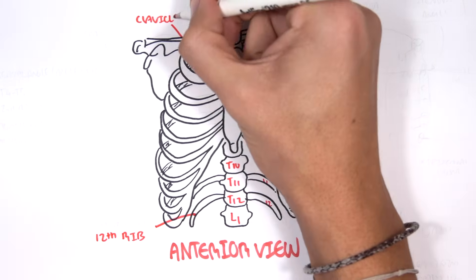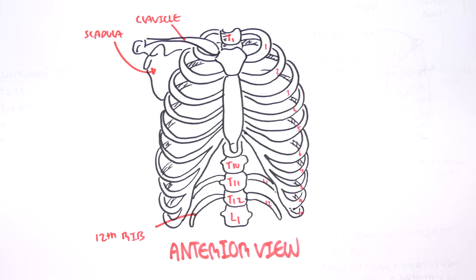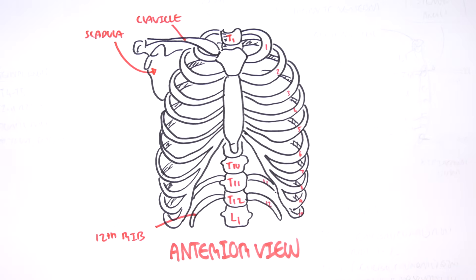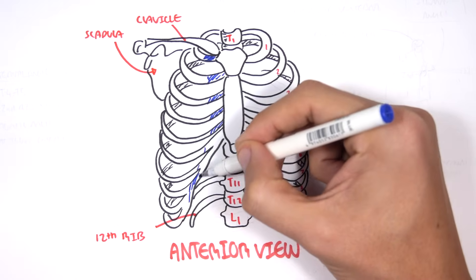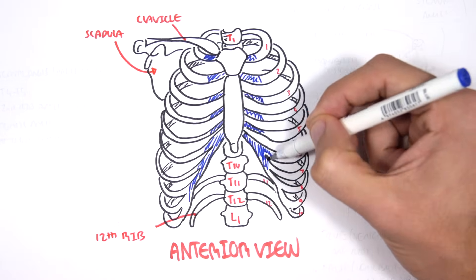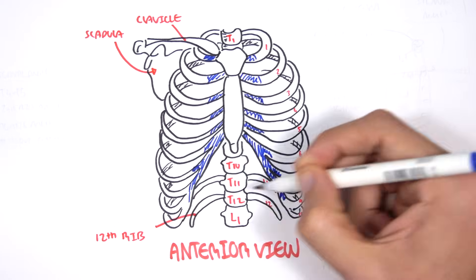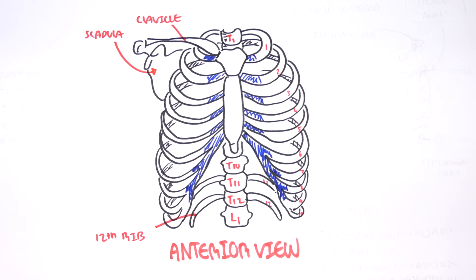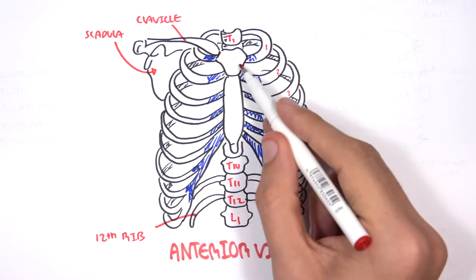Coming off the thoracic vertebra 12, so T12, we have the 12th rib, which is a floating rib here. Here is our clavicle and scapula. Now the ribs originate from the vertebra and connect to the sternum. The ribs actually joining to the sternum form cartilage, allowing for the expansion of the thorax during respiration.